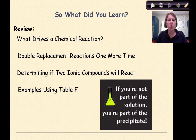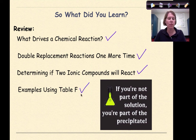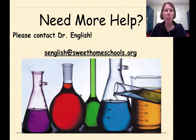To summarize this review: we went over the three factors that drive a chemical reaction, looked at double replacement reactions, used Table F to determine if two ionic compounds will react, and worked through some examples. Need more help? Feel free to contact me — I'm always looking for feedback. Have a great day.